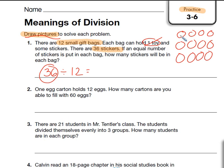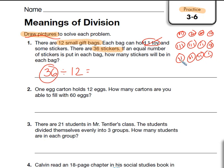The easiest way to do that is just to put tally marks or dots. So I'm going to go through and put one tally mark in each bag — going 1 through 12, then starting over for 13 through 24, then one more round for 25 through 36. Each bag gets three marks total. So as you can see, each bag got three stickers.